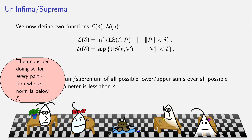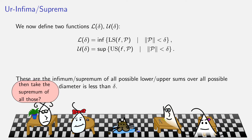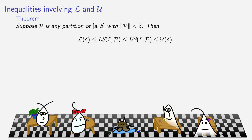We consider doing it for every partition whose norm is less than delta, and then take the supremum of all those if we're talking about upper sums. If we're talking about lower sums, we'd take the infimum. L of delta is the infimum of all lower sums over all partitions as long as the norm is less than delta. So if you have one particular partition P and its norm happens to be smaller than delta, its lower sum can't possibly be smaller than the infimum of all lower sums, and similarly its upper sum can't be bigger than the supremum of all upper sums.